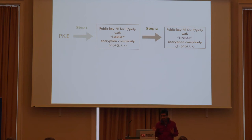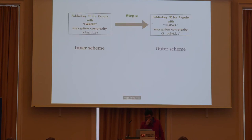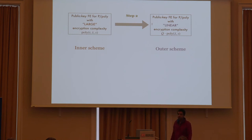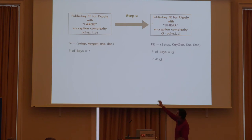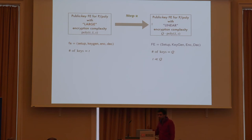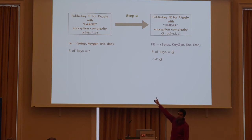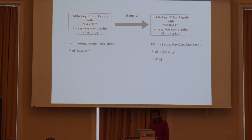The second step is simple and uses only elementary tools. I'm going to call the FE scheme with large encryption complexity the inner scheme, and the FE scheme with linear complexity the outer scheme. I'll use small letters to denote the inner scheme and capital letters for the outer scheme. I'll use T to denote the query bound for the inner scheme and Q for the outer scheme.